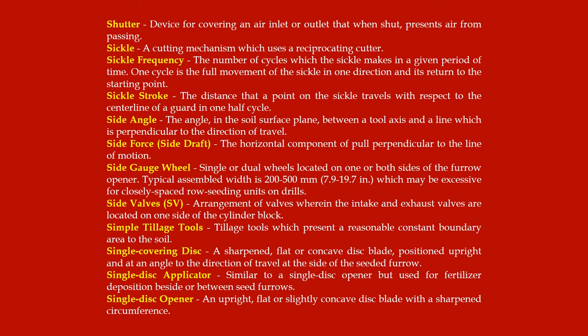Simple tillage tools: tillage tools which present a reasonably constant boundary area to the soil. Single covering disc: a sharpened flat or concave disc blade positioned upright and at an angle to the direction of travel at the side of the seeded furrow.